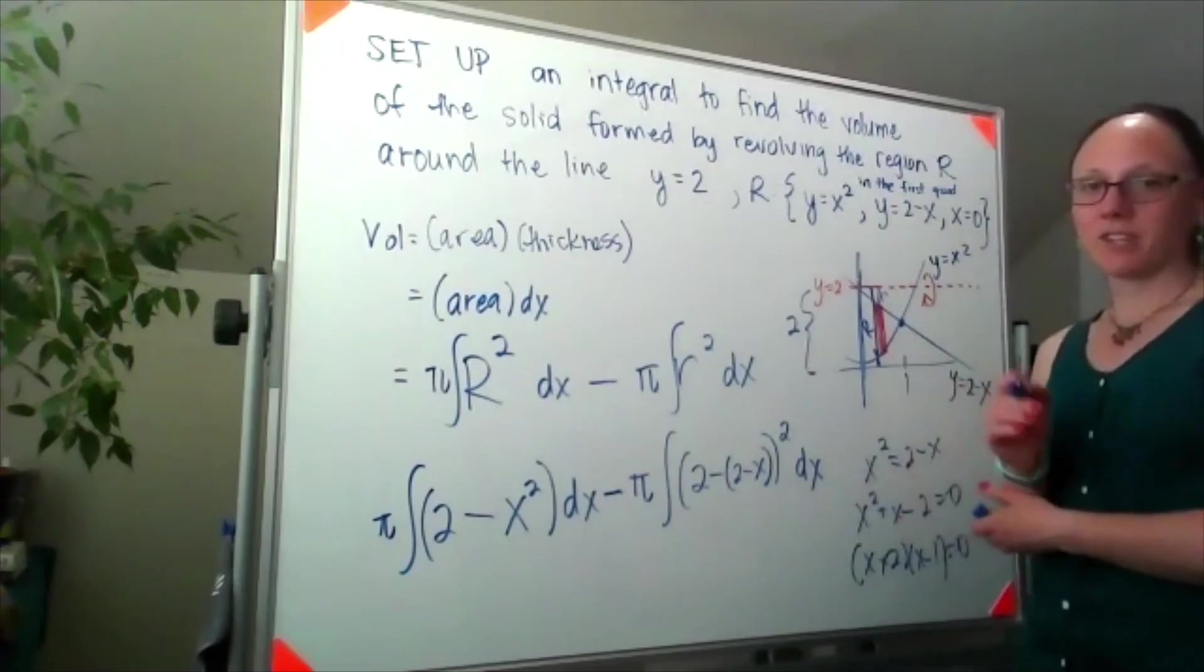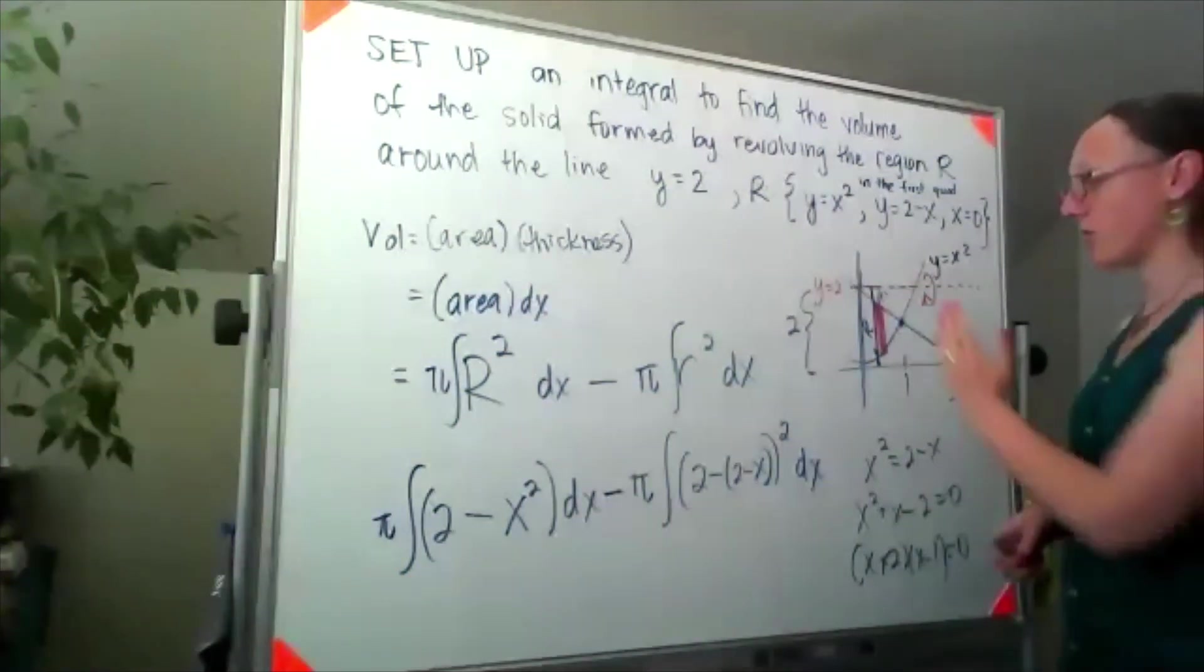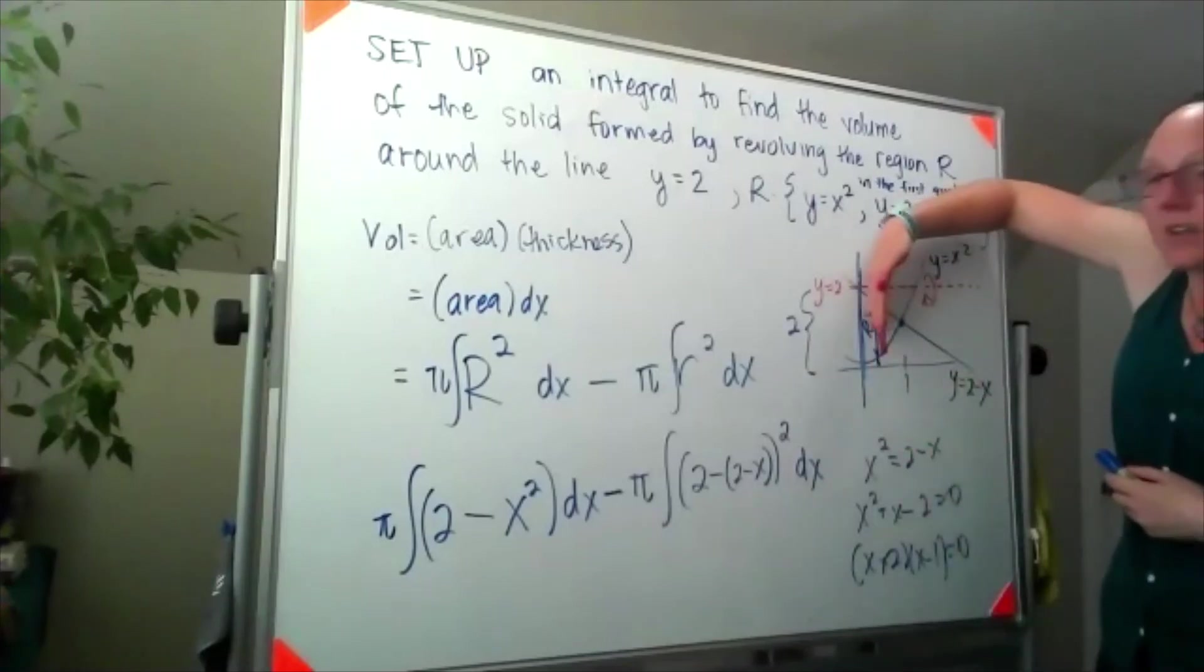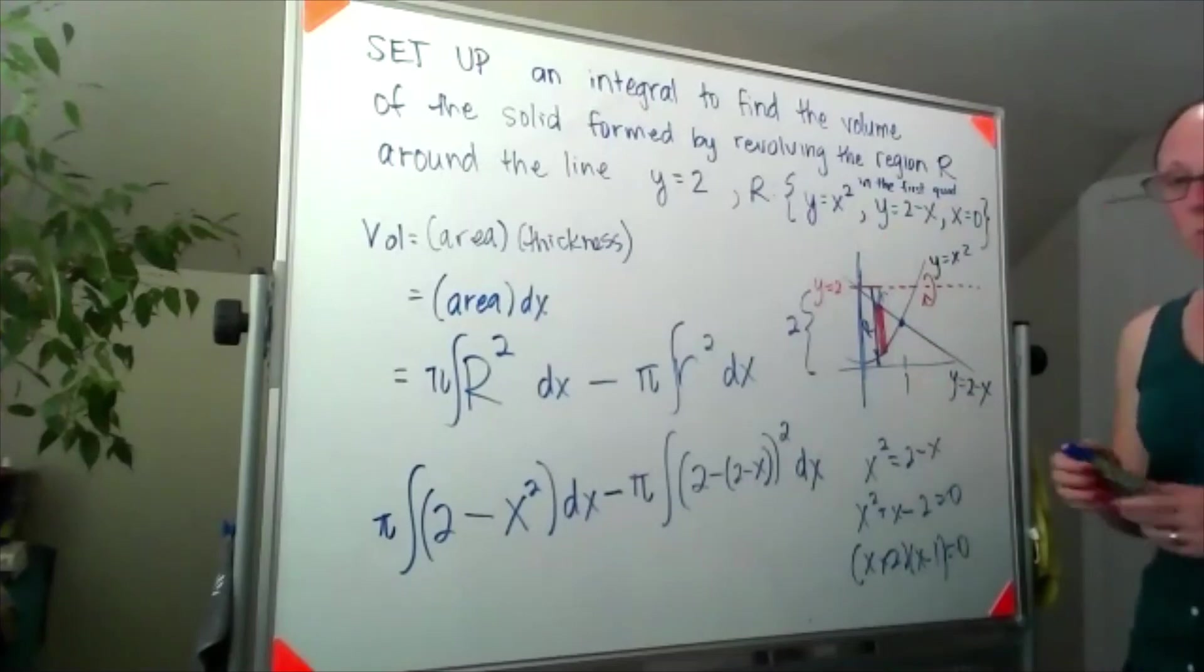So each of these integrals, if I think about those arbitrary cross sections, I'd be taking them as far to the left as 0 and they'd come as far to the right as x equals 1.